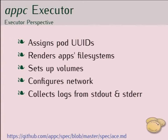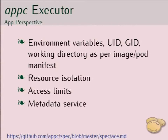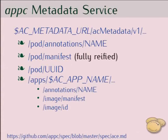The last part of the system is the executor, which is essentially the runtime. From the executor's perspective it is responsible for assigning pod UIDs, rendering the file system, setting up volumes, and starting the application process. From the app's perspective, the app executor is responsible for ensuring the app can see the proper environment variables, UID, GID, and so on. Inside the pod there is an app meta — an Application Container Metadata Service — so an environment variable is exposed that leads to the metadata service, and an application can see annotations from its manifest, its full manifest and UID, and the image manifest and image ID of the current app.